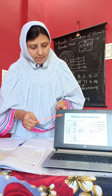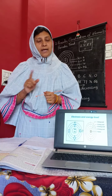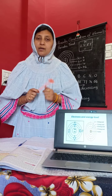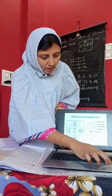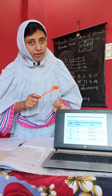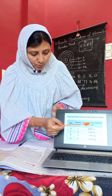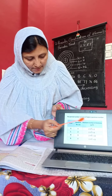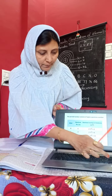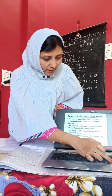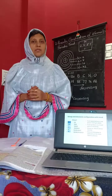Each shell has its energy level as well as the capacity of electrons. The K shell has a capacity of 2, L has a capacity of 8, M has a capacity of 18, and N has a capacity of 32. On that basis, we look at how electrons are arranged in a particular order.